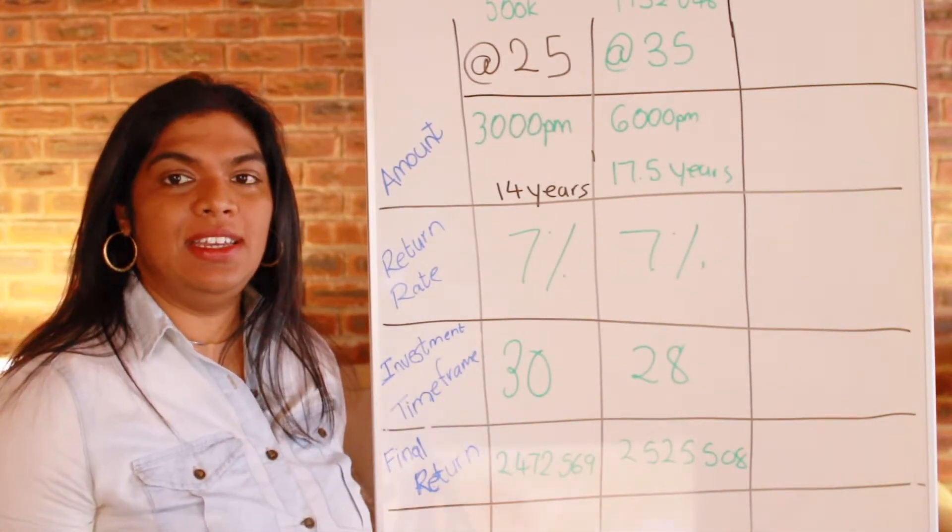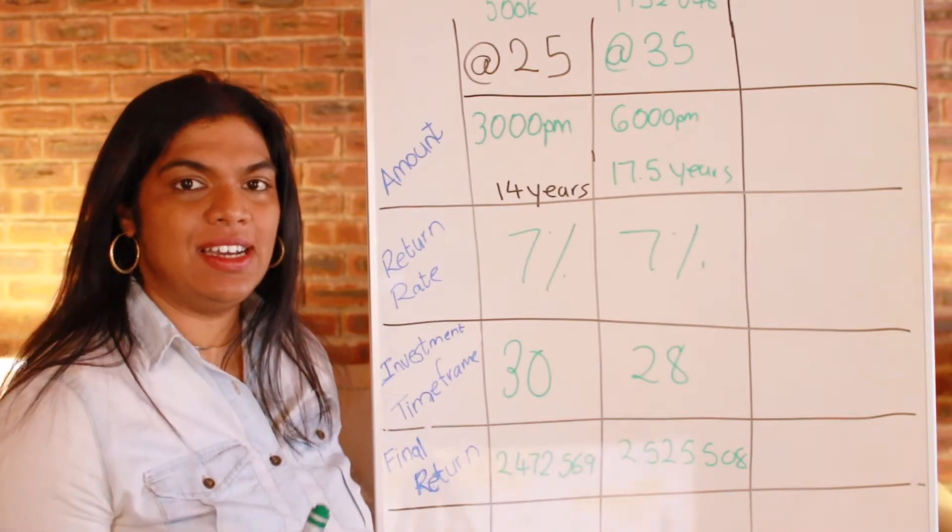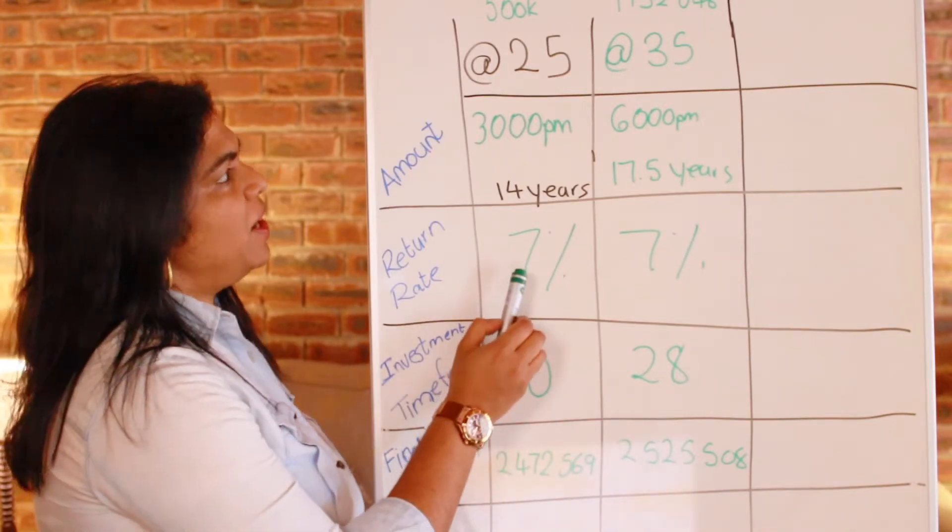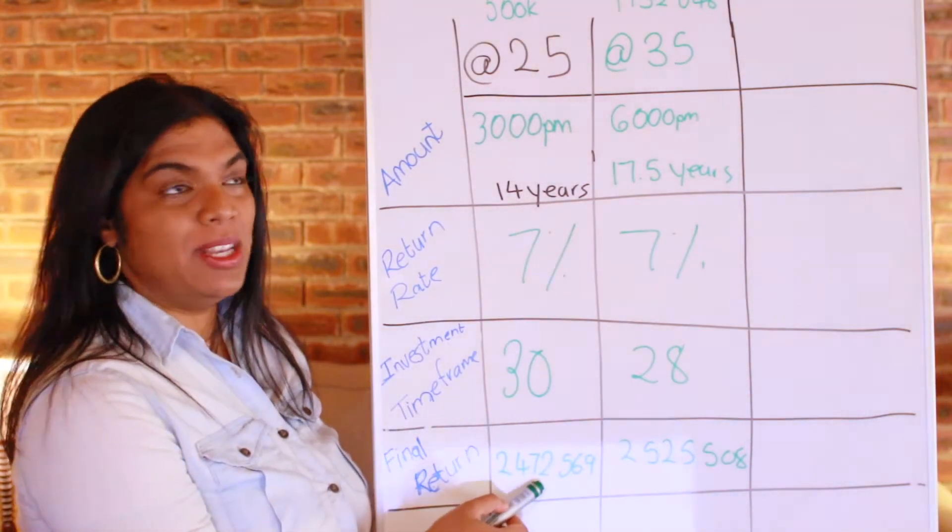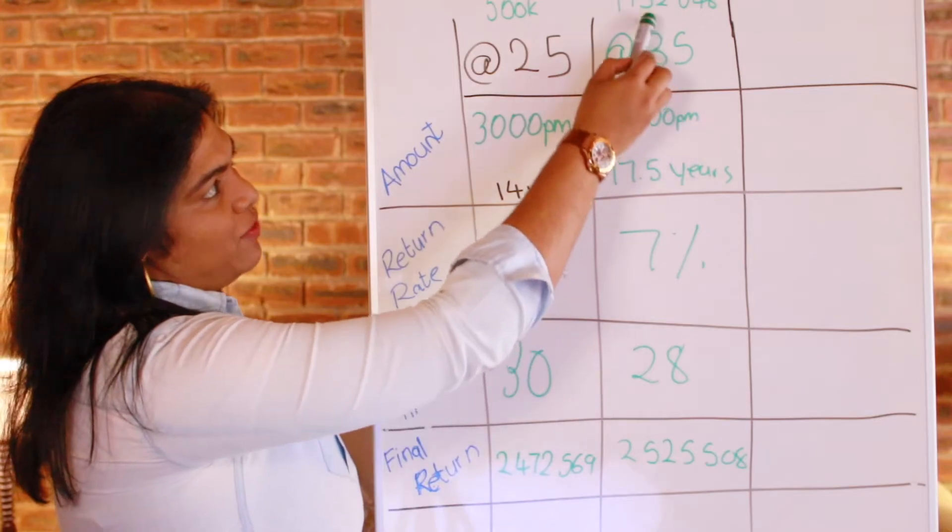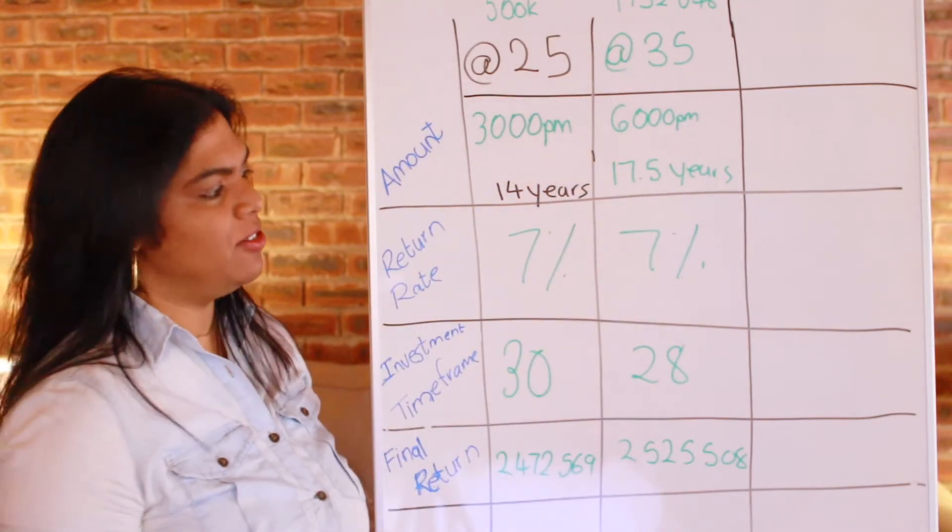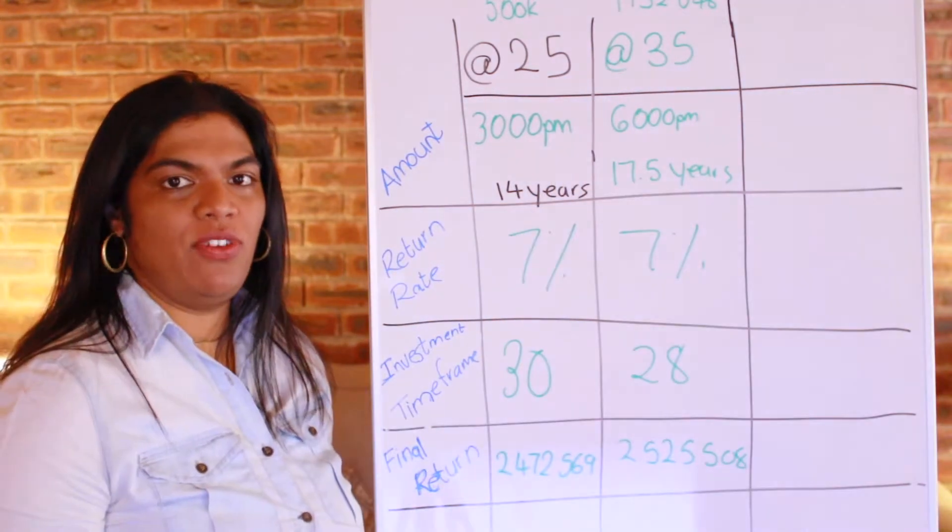So you can see now the value of investing early and the value of time in the market. At 25, you only have to invest 500,000 rand to get that almost 2.5 million. Whereas at 35, you'd have to invest almost 1.8 million rand to get a similar 2.5 million.